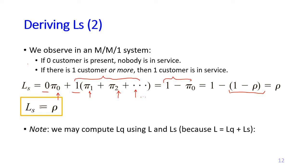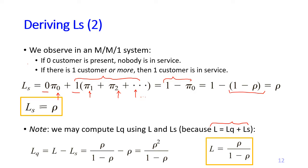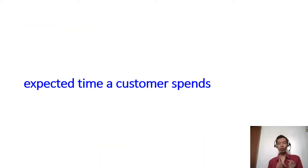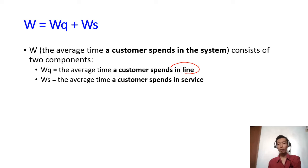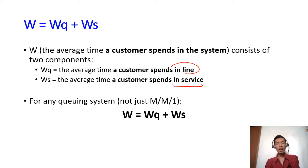Now we can use the relation L equals LQ plus LS: given L and LS, we may calculate LQ. We've finished talking about L, LQ, and LS, which are all related to the number of customers. Now let's talk about time. W is the average time a customer spends in the system. Similar to L, it may be divided into Wq and Ws. Wq is the average time a customer spends in line or in queue, and Ws is the average time a customer spends in service. Therefore, W equals Wq plus Ws, and this applies to all queuing systems.